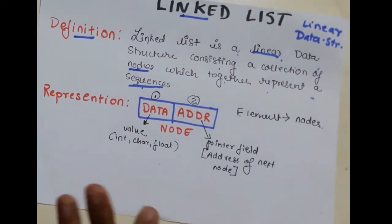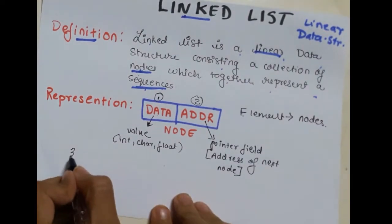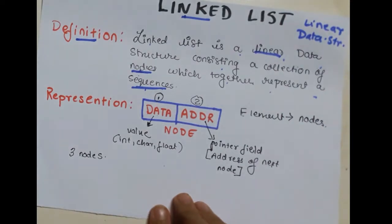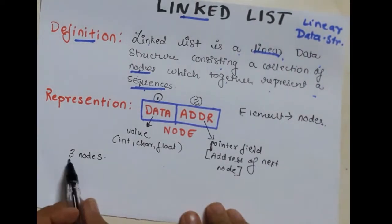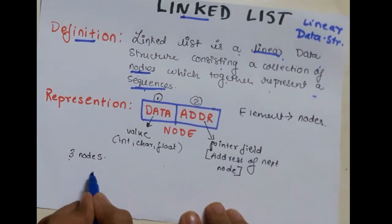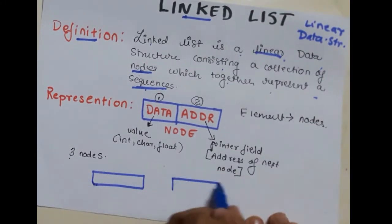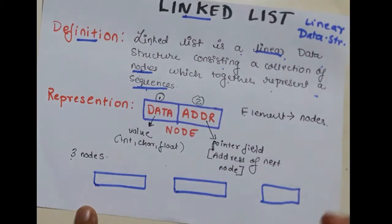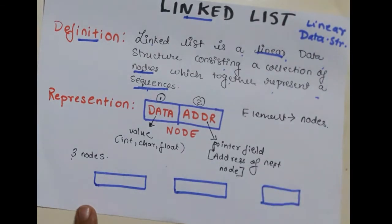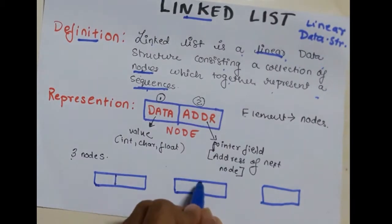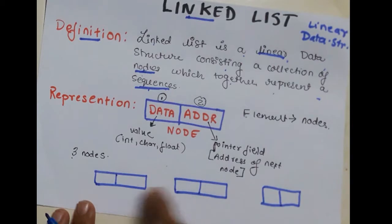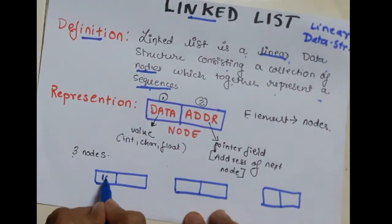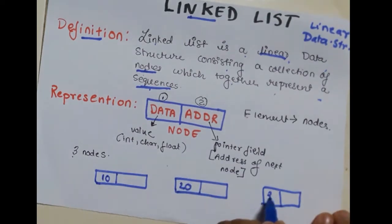Now let us consider three nodes to show how a linked list is actually formed. We will consider three nodes — one, two, and three. The number of nodes can increase or decrease, that is shrink or grow, as per our demand. Now we will insert data in these three nodes and fill up the data field with values: 10, 20, and 30.